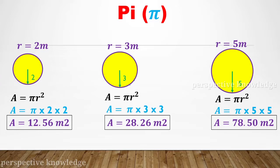We will create three different circles. The first circle has a radius of 2 meters, the second circle has a radius of 3 meters, and the third circle has a radius of 5 meters.